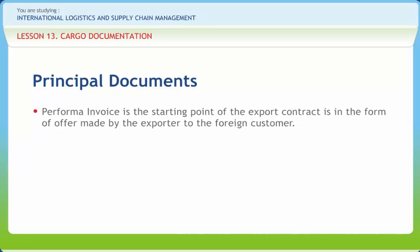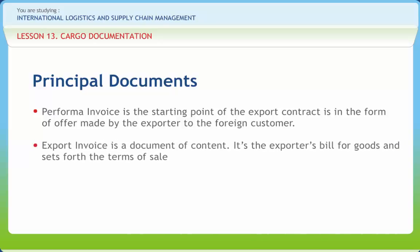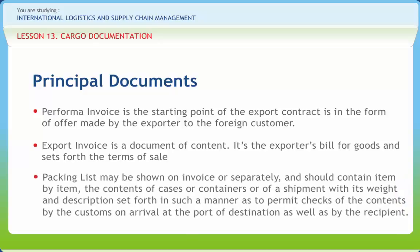Proforma invoice is the starting point of the export contract and is in the form of an offer made by the exporter to the foreign customer. Export invoice is a document of content — it is the exporter's bill for goods and sets forth the terms of sale. The invoice is a basic document and the exporter should strictly follow the requirements of the importer in regard to invoicing. Packing list may be shown on the invoice or separately and should contain item by item the contents of cases or containers, with weight and description set forth in such a manner as to permit checks by customs on arrival at the port of destination as well as by the recipient.